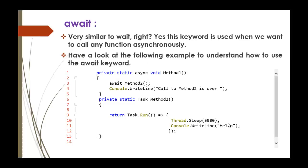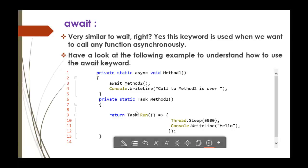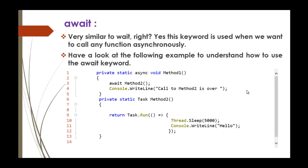Now let us understand what Await is — very similar to Wait. This keyword is used when we want to call any function asynchronously. If you have a function and want to call it asynchronously, you use the Await keyword. For example, here we have Method2, and if I wish to call Method2 asynchronously, I add the Await keyword in front of it. Now Method2 will be called asynchronously. That's the importance of Async and Await keywords.